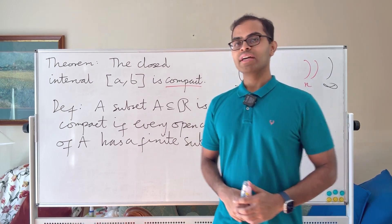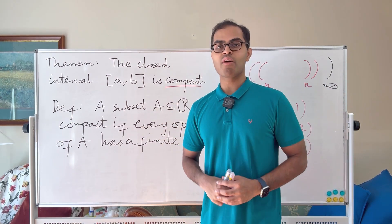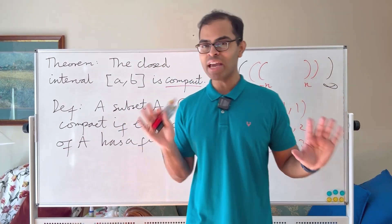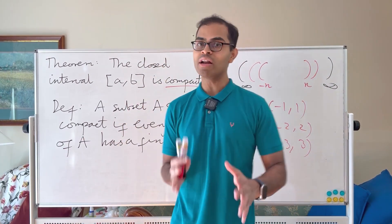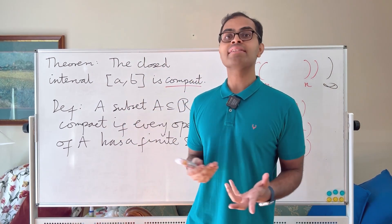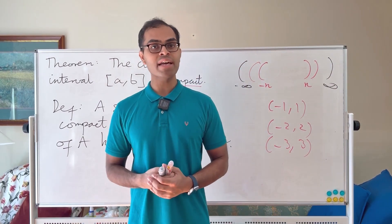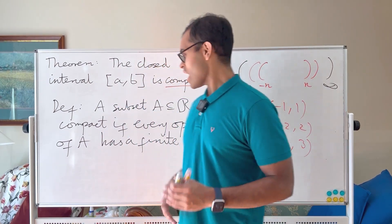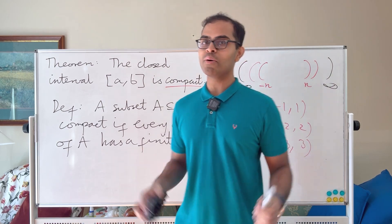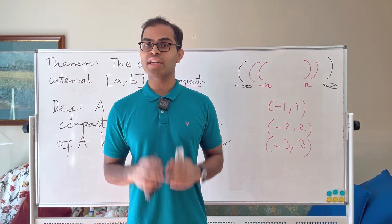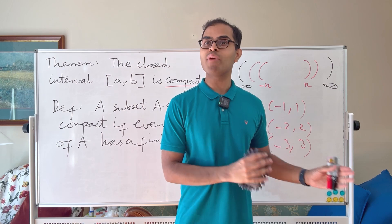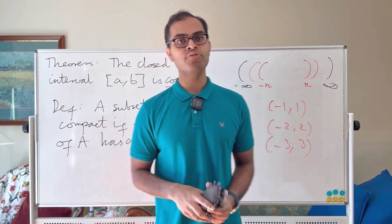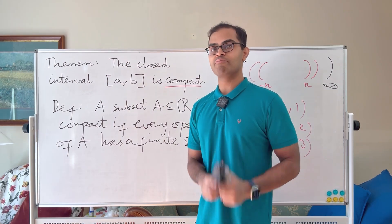What we're going to prove is that in the case of a closed interval, every open cover has a finite subcover. If you're enjoying this content — this is topology, taught at the third-year level for serious math majors — please like, subscribe, and consider supporting on Patreon. You can find a Patreon link in the description with exclusive perks. Let's get into this proof of why the closed interval [A, B] is compact.